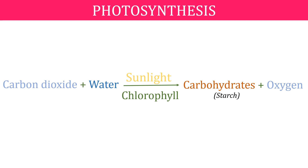Besides leaves, photosynthesis also takes place in other green parts of the plants, i.e. in green stems and green branches. Desert plants have scale or spine-like leaves to reduce loss of water by transpiration. These plants have green stems which carry out photosynthesis.